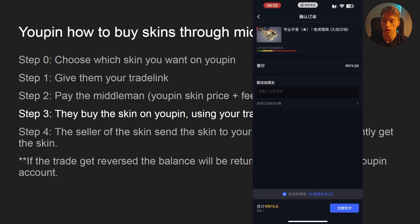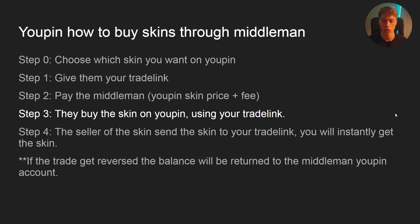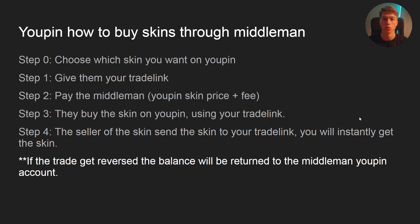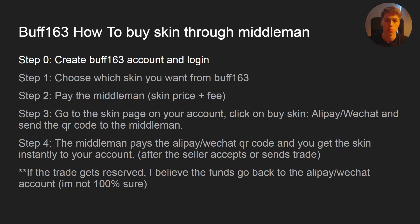The skin will then be in your inventory — that's how easy it is. Step four: the seller of the actual skin on UPin needs to send you the skin. This is usually very quick but can take a few hours; they have 12 hours to send it. It will be instantly in your inventory via your trade link. If the trade gets reversed — small chance right now — the balance is returned to the middleman's UPin account.